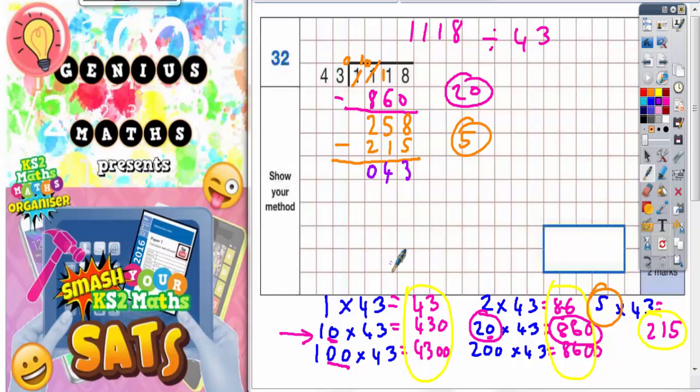So I need to keep going because I am trying to get down as low as I can. So what chunk of 43's can I take off 43? Well this one now I can take off 43 itself. And 43 is 1 lot of 43. So you need to write 1 at the side. And obviously what is going to happen now is 43 taking away 43 is going to leave you with 0.